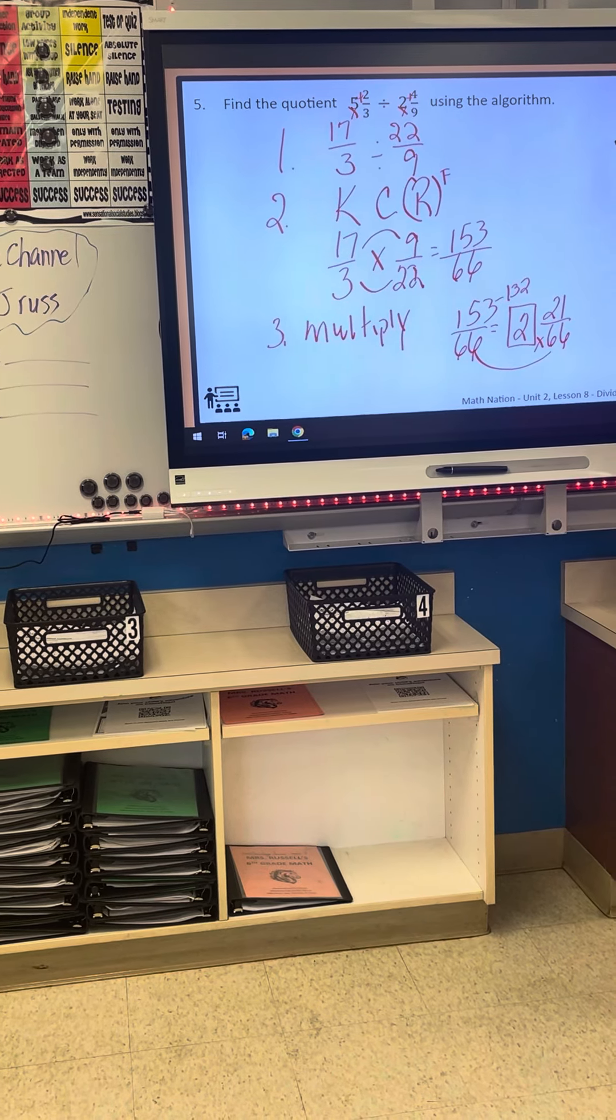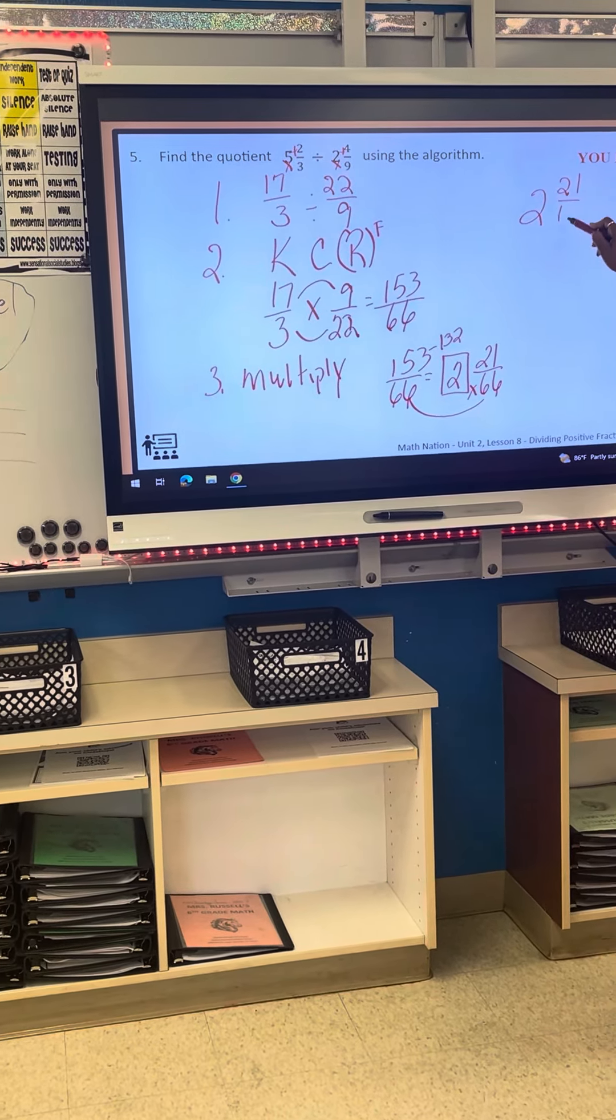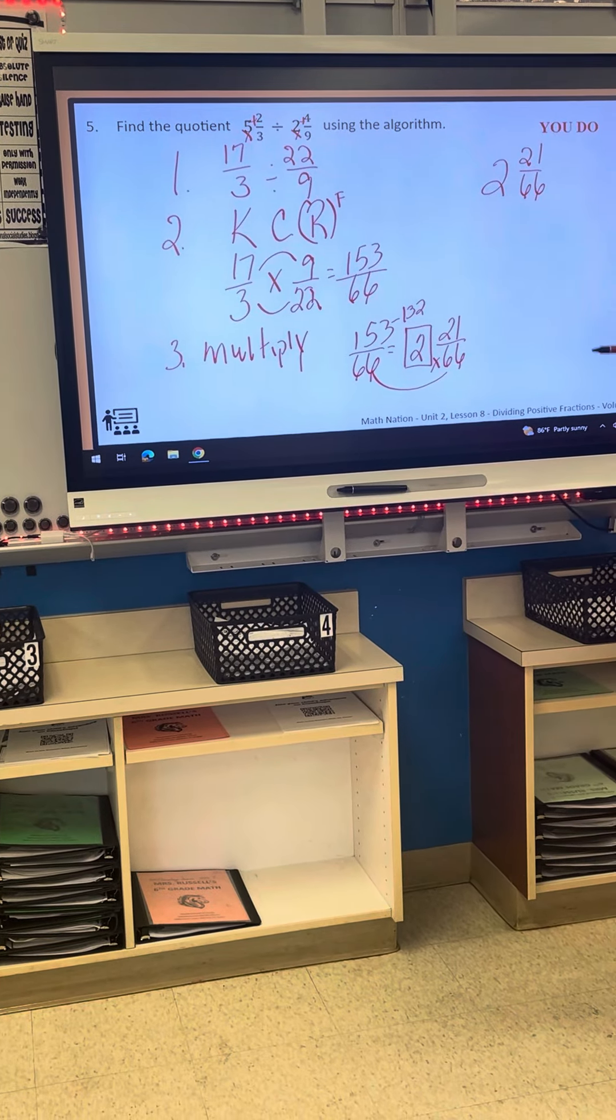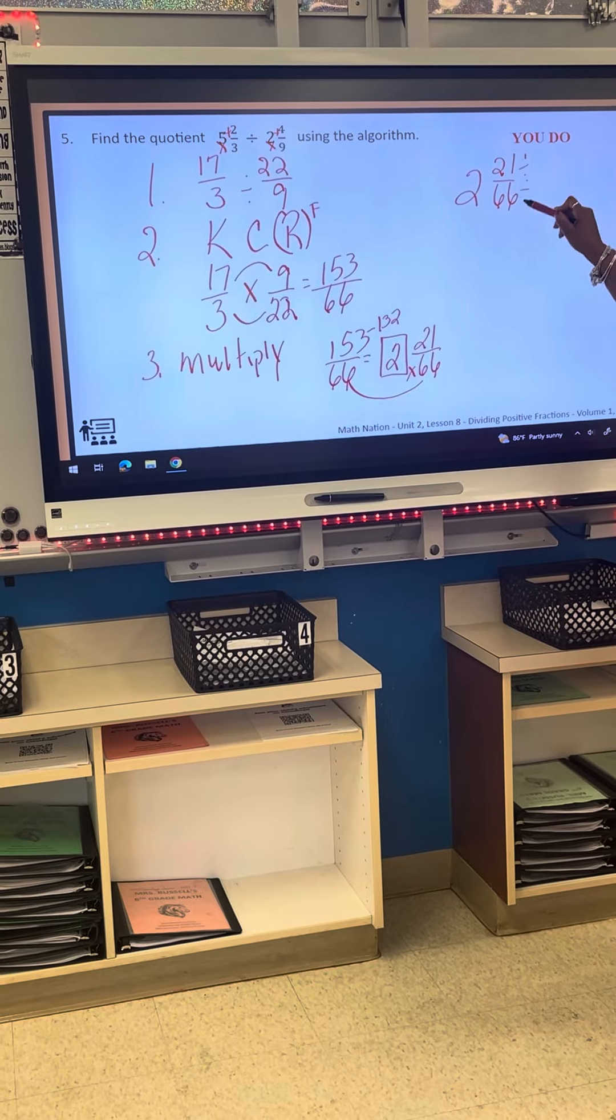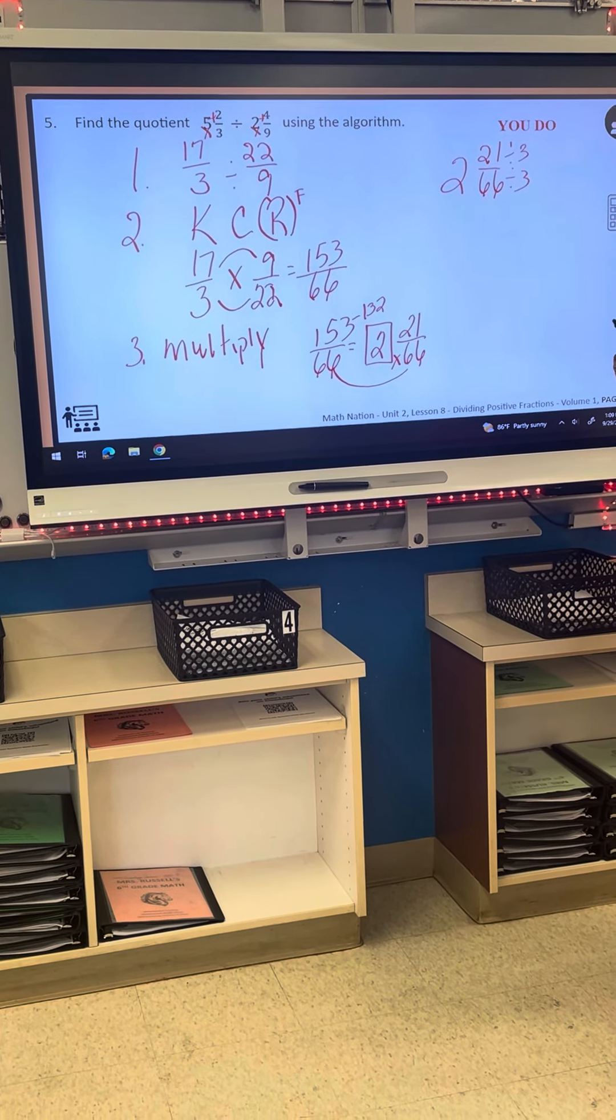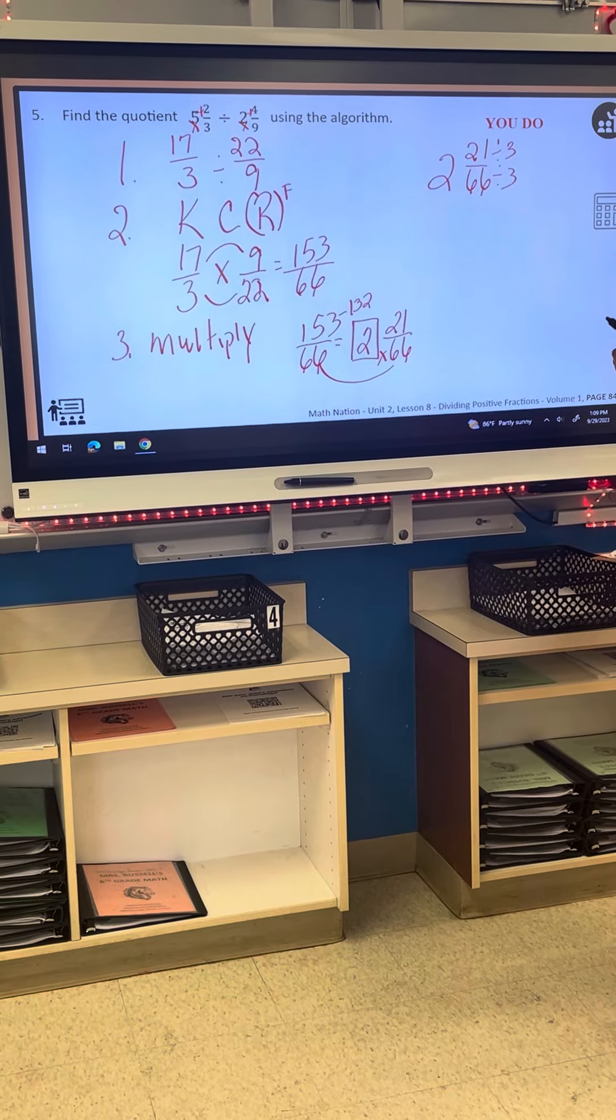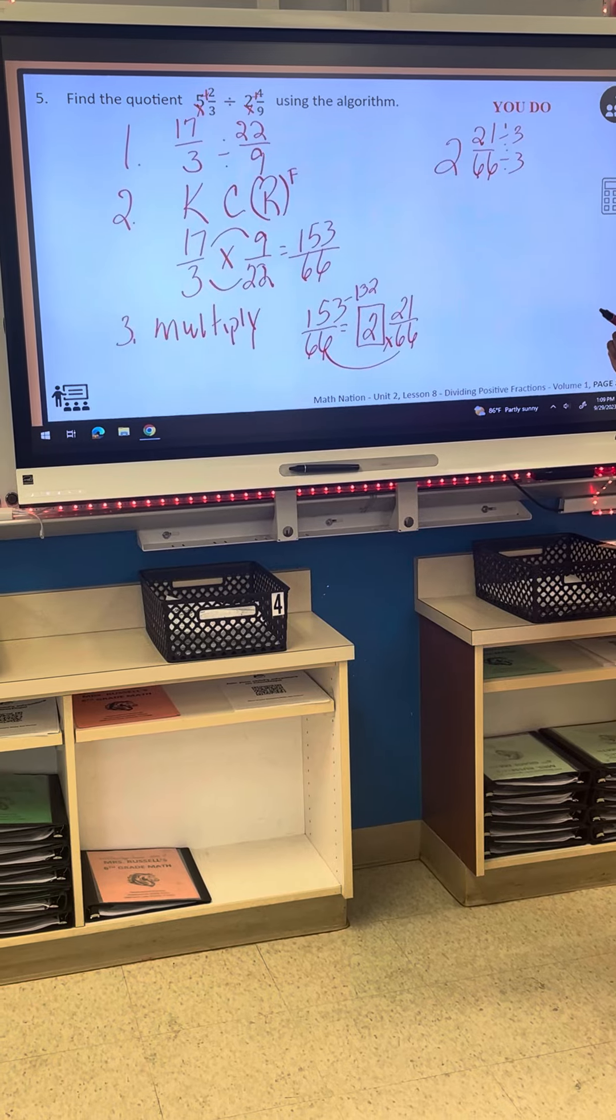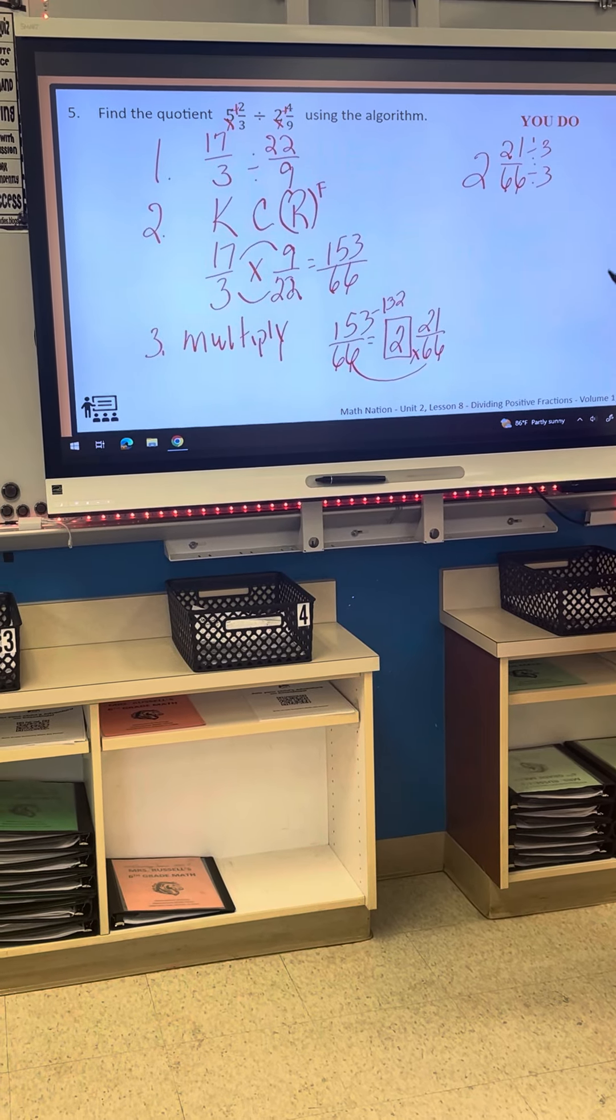So here we have two and twenty-one over sixty-six. But I need to reduce that. So what number can I divide both of these by? Three. How do you know? Because three times seven is twenty-one, and three times twenty-two is sixty-six.